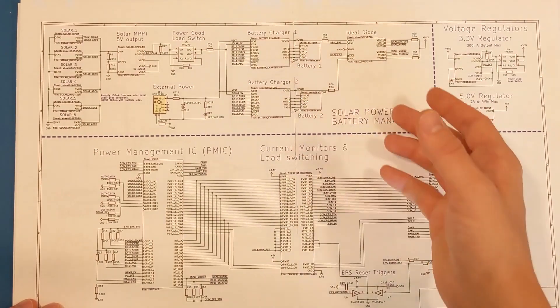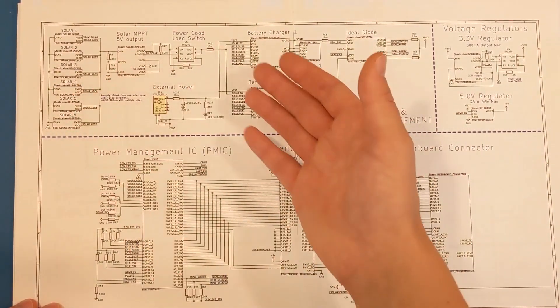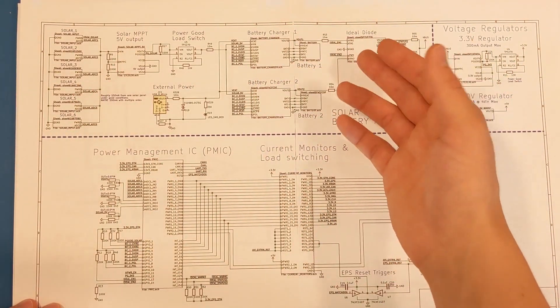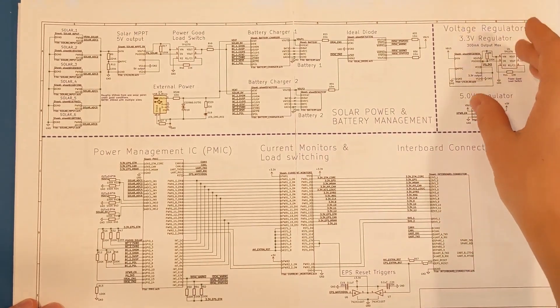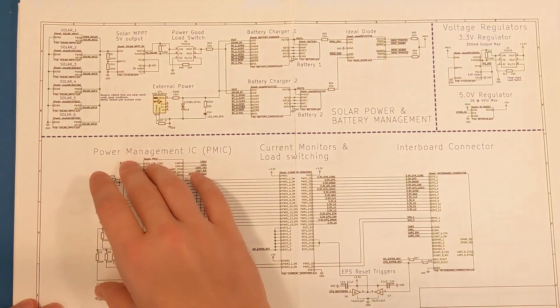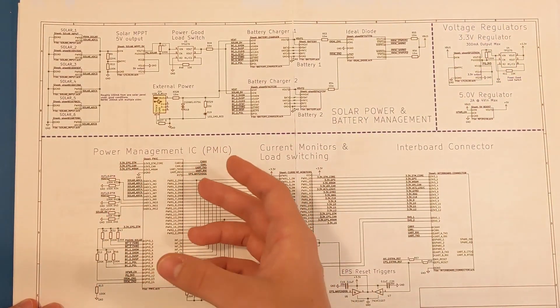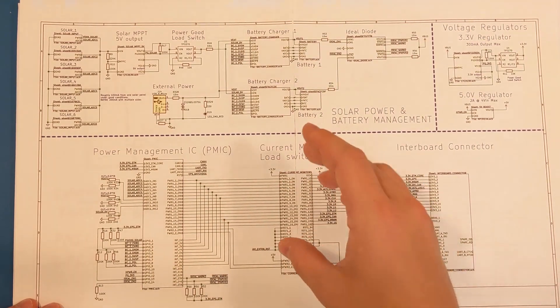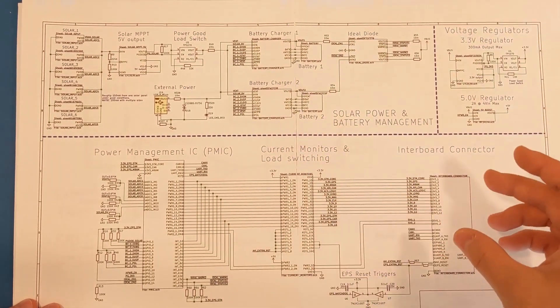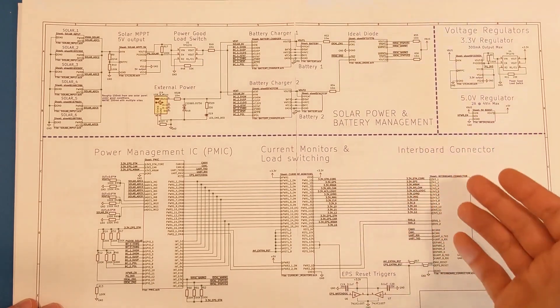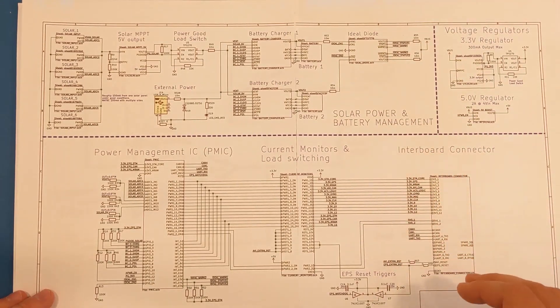First off, this upper section is for the solar panels, battery chargers, and battery output. Up here is voltage regulators, and down here, we have a power management IC or PMIC, load switching, current monitoring, and the interboard connector, which connects this to the rest of the CubeSat.